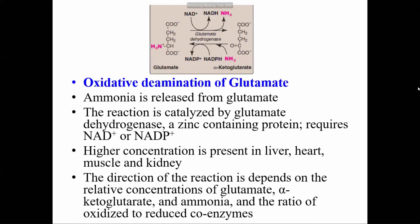In oxidative deamination, unlike transamination where the amino group is transferred from one amino acid to another keto acid with no liberation of free ammonia, the amino group from the amino acid is directly liberated as free ammonia. In deamination, the nitrogen of the amino groups of the amino acids is released as free ammonia.